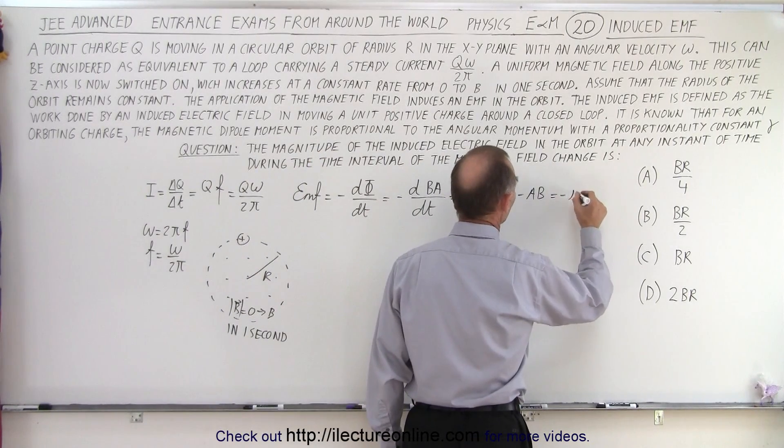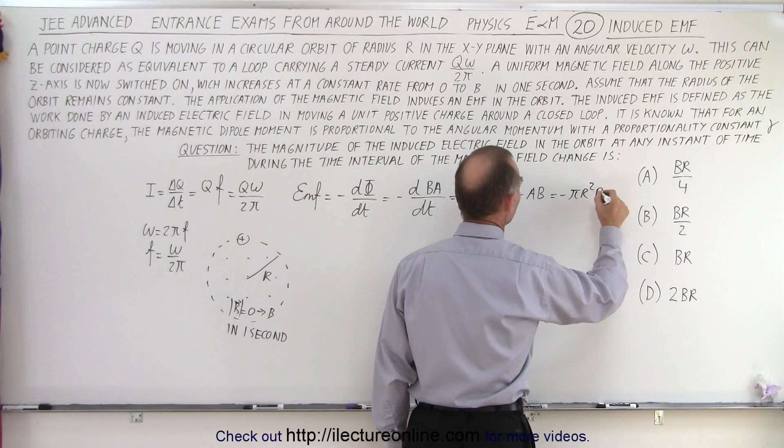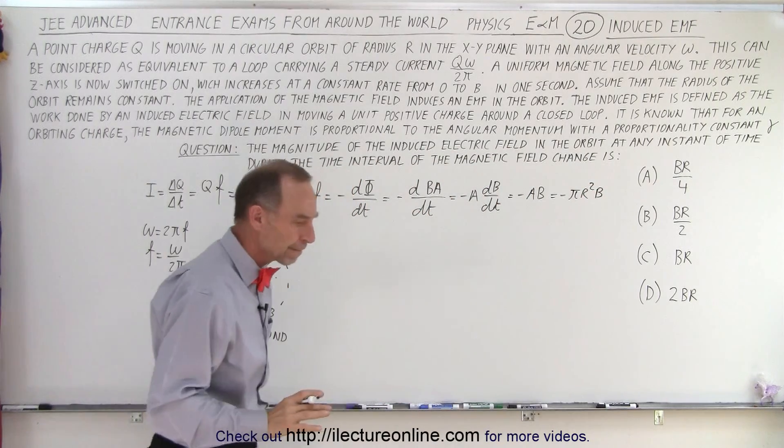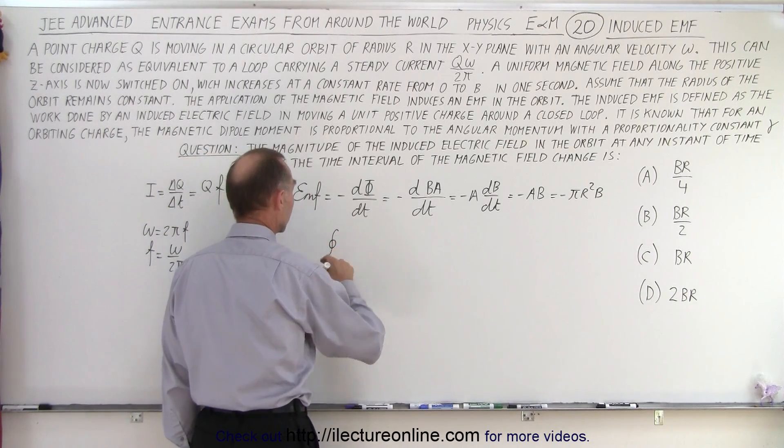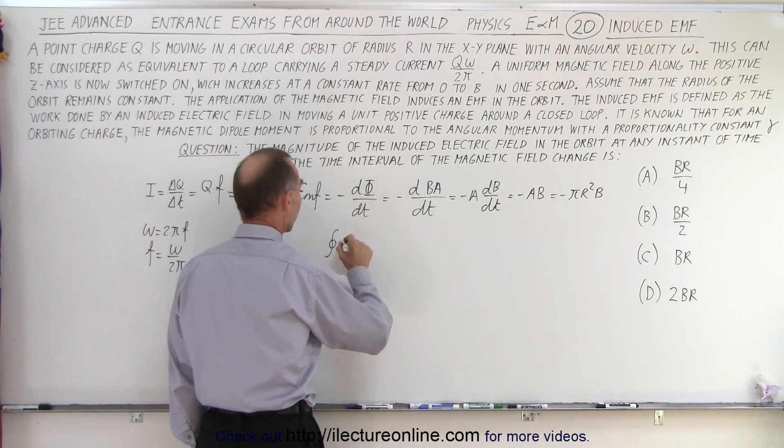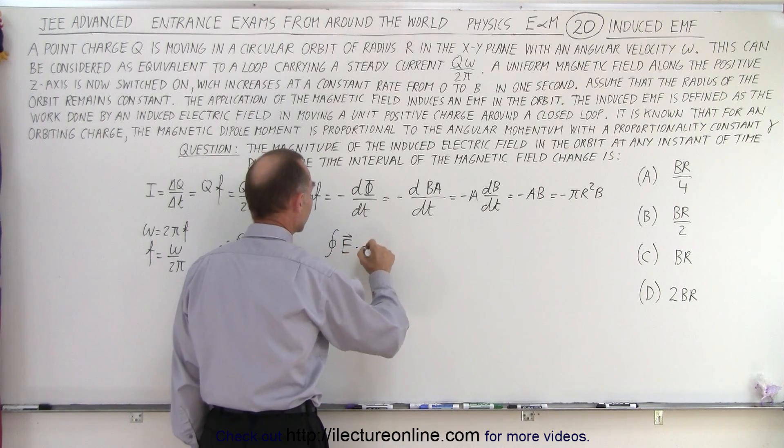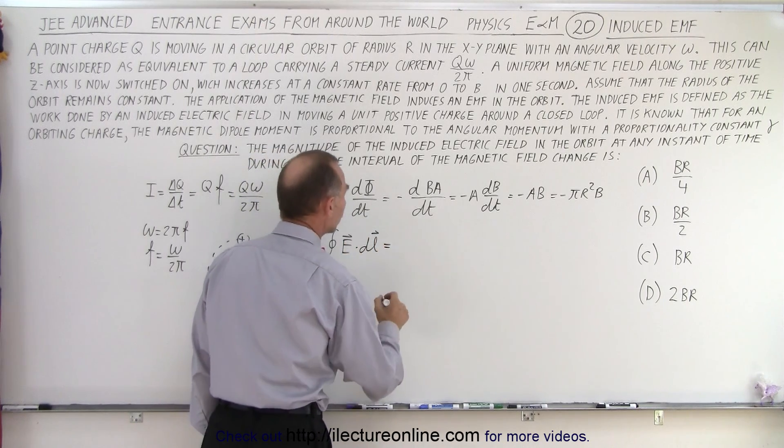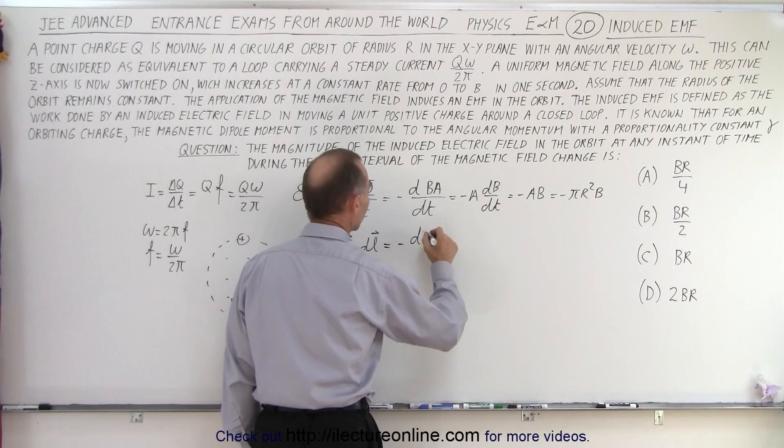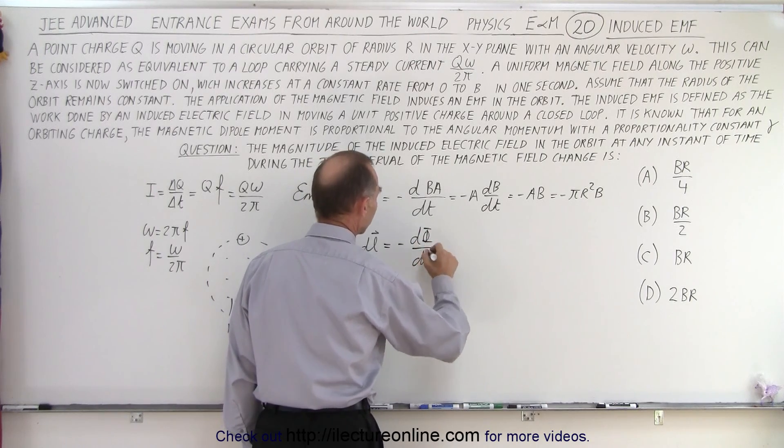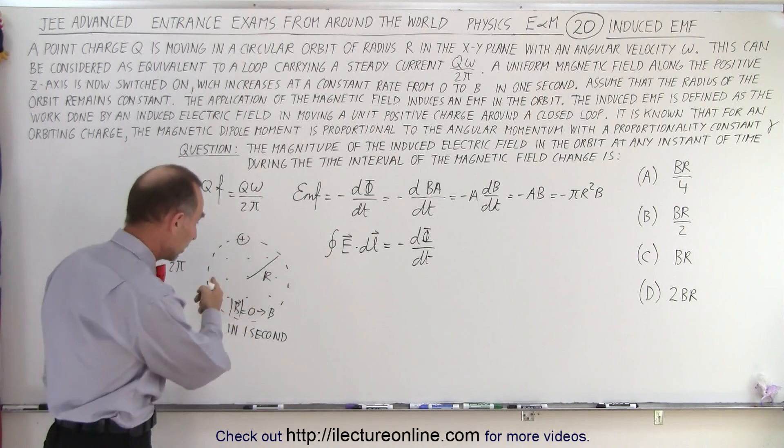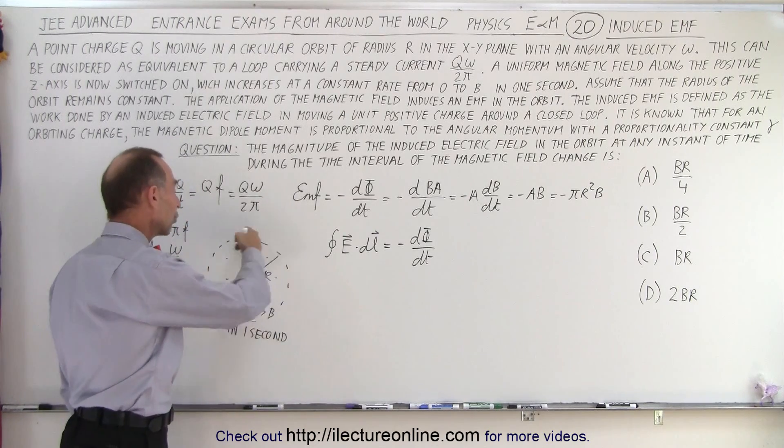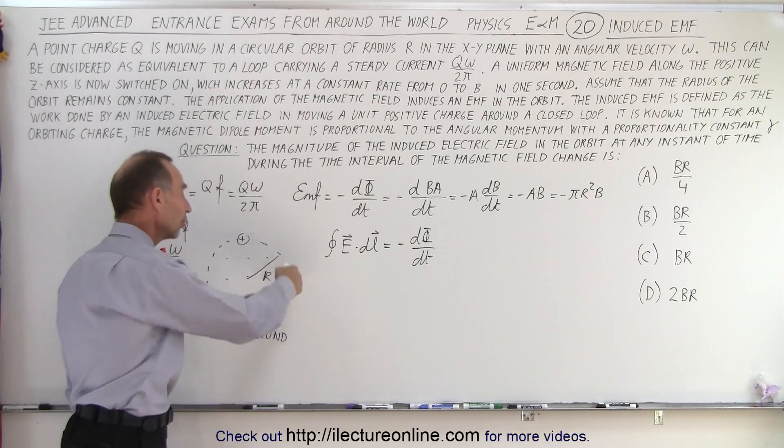And then from Gauss's law we can also indicate that the integral around the loop of E·dl is equal to the negative change of the magnetic flux with respect to time which is what we just calculated.